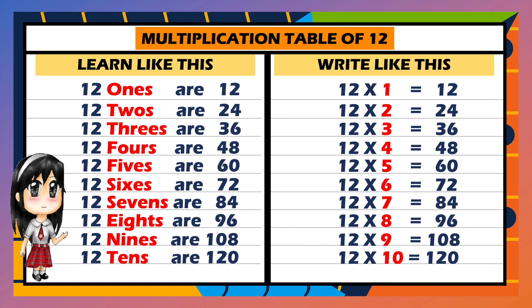12 ones are 12. 12 twos are 24. 12 threes are 36. 12 fours are 48. 12 fives are 60. 12 sixes are 72. 12 sevens are 84. 12 eights are 96. 12 nines are 108. 12 tens are 120.